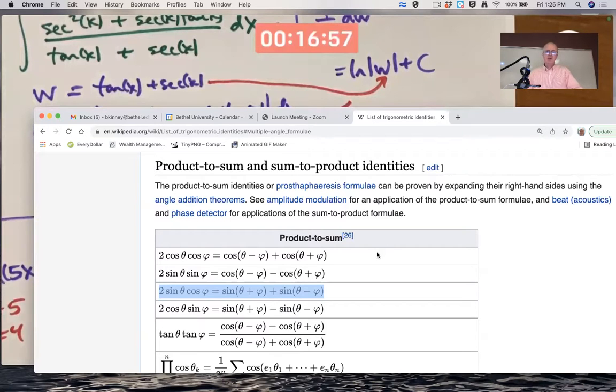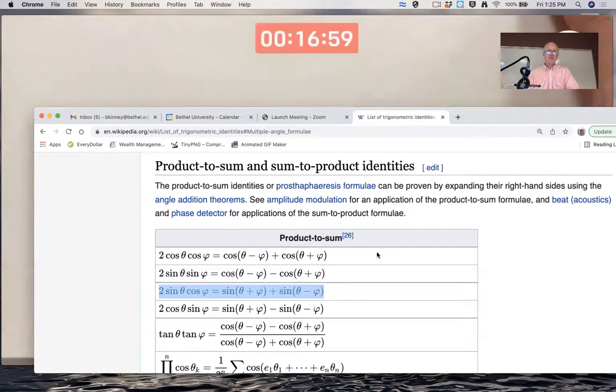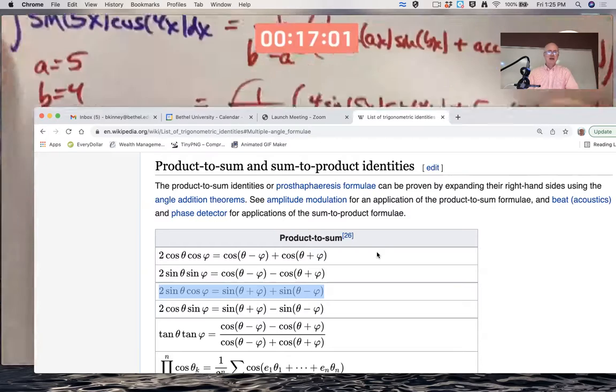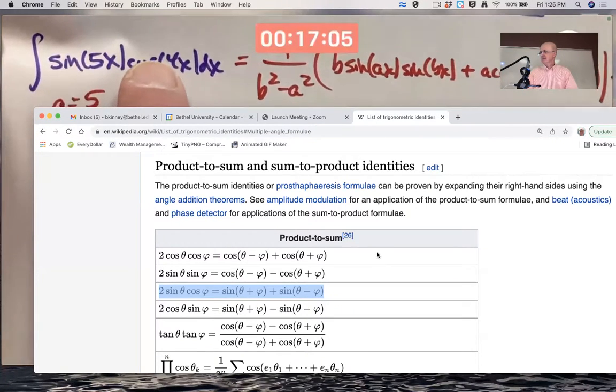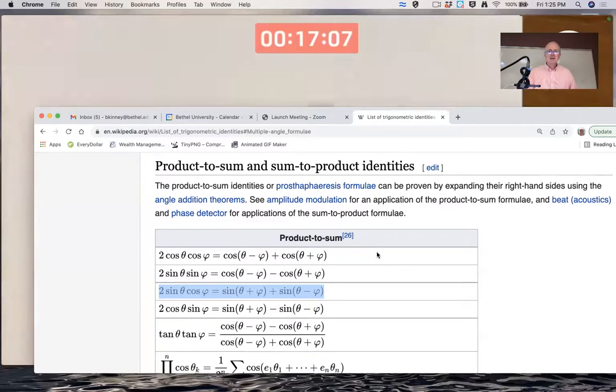Well, for this problem, they are, where is it? They are 5x and 4x. So theta plus phi is going to be 5x plus 4x is 9x. And theta minus phi is going to be 5x minus 4x is just x. That would be an easier way to go, actually, producing a simpler looking answer, actually.